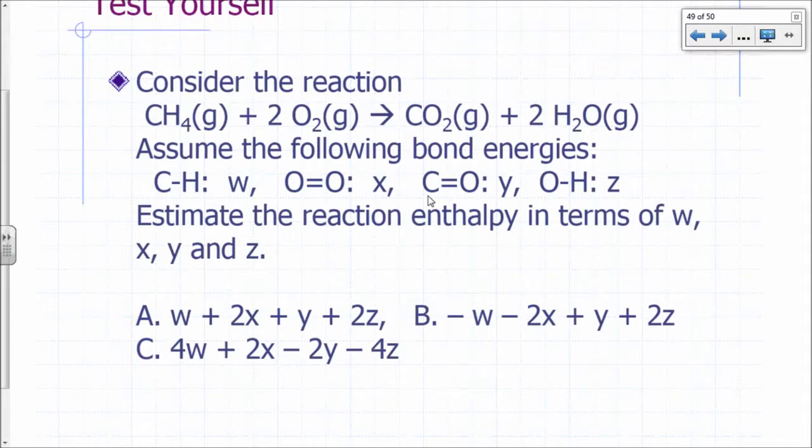All right, so let's consider this reaction right here. Methane plus oxygen gives you CO2 plus 2H2O. Let's say we've looked up the bond energies to be W for C-H bond, X for a double bond between two oxygens, Y for a double bond between carbon and oxygen, and Z for an O-H bond. What's the delta H for this reaction in terms of W, X, Y, and Z?